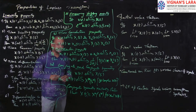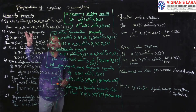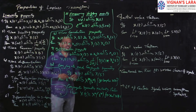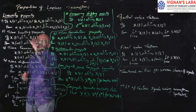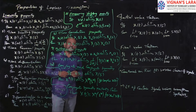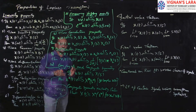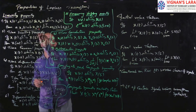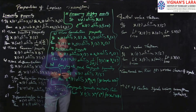First property: linearity property. You have to take two signals x1(t) and x2(t). If x1(t) has Laplace transform X1(s) and x2(t) has Laplace transform X2(s), then the linearity property states that a·x1(t) + b·x2(t) will have Laplace transform a·X1(s) + b·X2(s). The changes that take place in the input will take the same changes in the output.